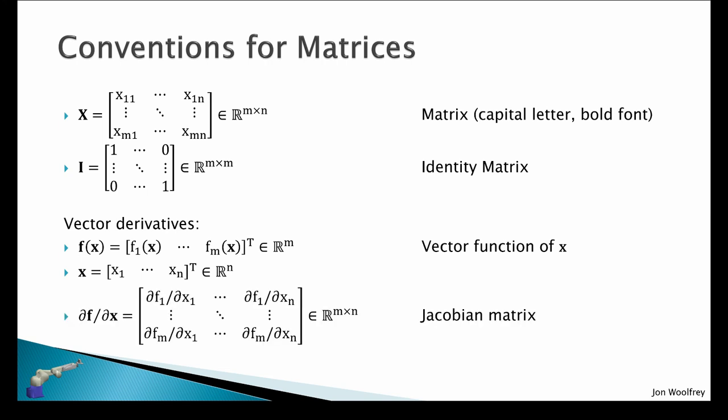Then if I take the partial derivative of this vector function f with respect to the vector x, what I get is an m by n matrix of partial derivatives, and this is called a Jacobian matrix. So all the elements will be the partial derivative of each scalar function within f with respect to an element in x.